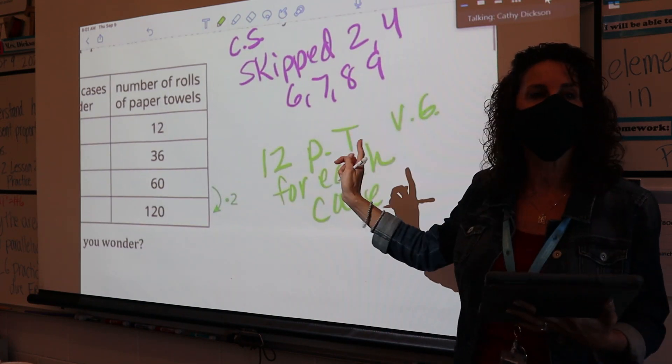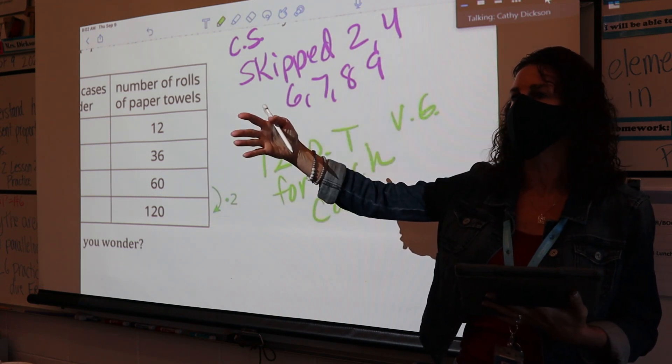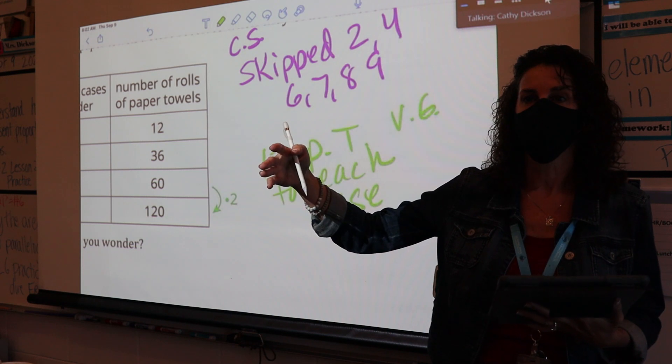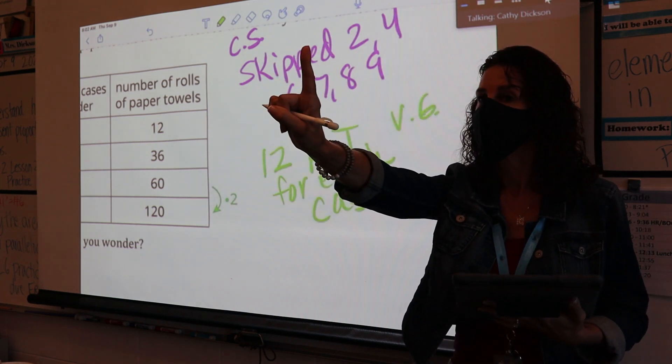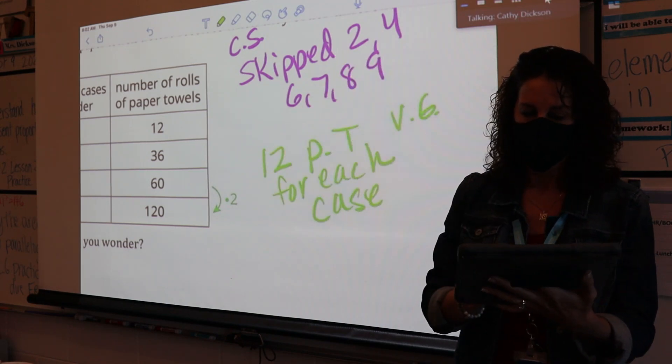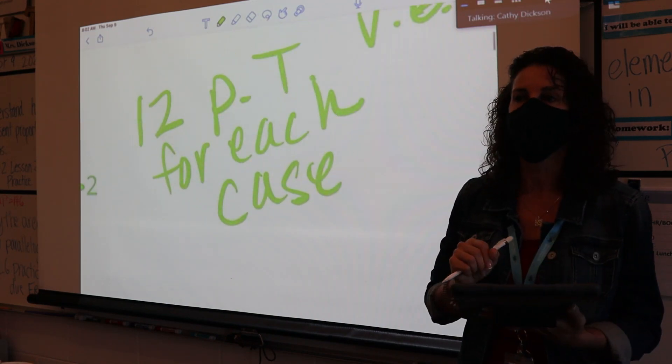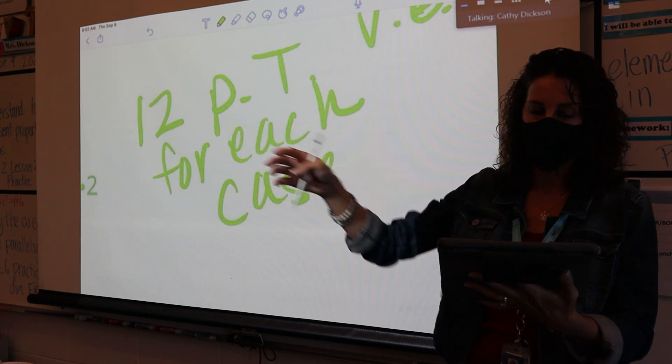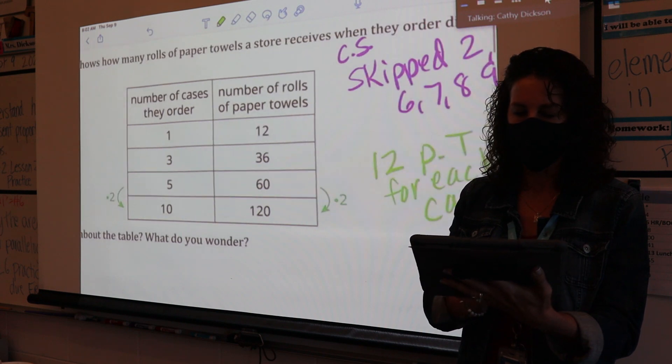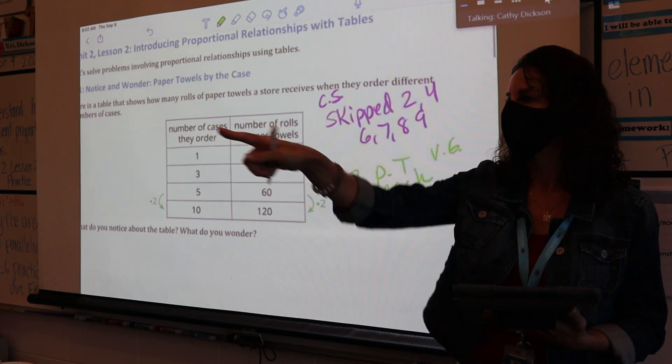Now yesterday I want to connect to what we talked about, because I was filling you in about equivalent ratios, and we were talking about a unit rate. Remember I said a unit rate is the amount per one of something. It's the amount of something for every one. Did she just tell us the unit rate? 12 paper towel rolls for each one case? Yes, that's the unit rate. Good job.